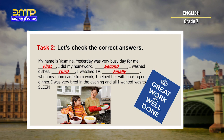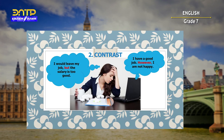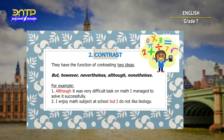Great work and well done, everyone! Number two is contrast. The examples include: I would leave my job, but the salary is too good. Or: I have a good job; however, I am not happy. Contrast linking words have the function of contrasting two ideas. The linking words include: but, however, nevertheless, although, nonetheless. For example: Although it was a very difficult task on math, I managed to solve it successfully. The second example: I enjoy math subjects at school, but I do not like biology.